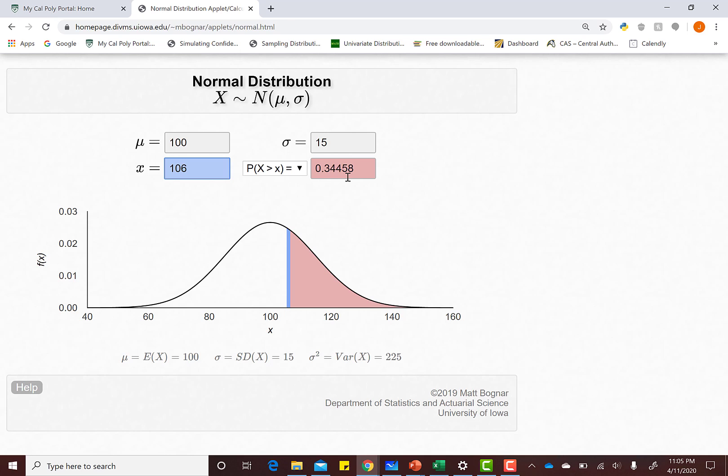So what you're probably thinking is, well, what's the point of this? Right? We can do things without turning it into a Z score. And that is true right now. However, come a week or two from now, we won't be able to change your mean and standard deviation.